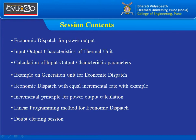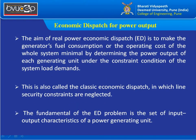The aim of economic dispatch is to achieve economy in real power generation. Real power generation must be minimized in terms of fuel consumption and operating cost. This is obtained by calculating the power output from generating units that satisfies load demand under certain constraint conditions. When security constraints are neglected, this is the classical economic dispatch method; when security constraints are included, it becomes security-constrained economic dispatch.